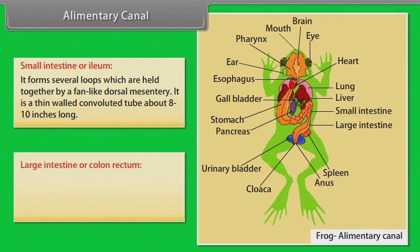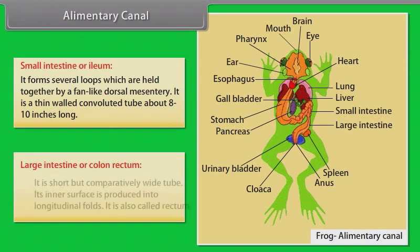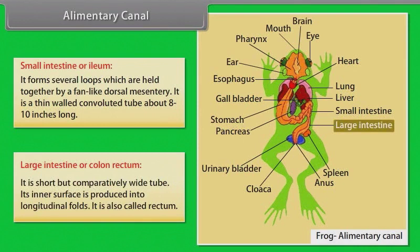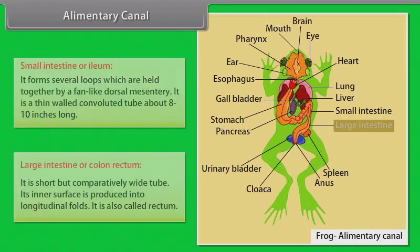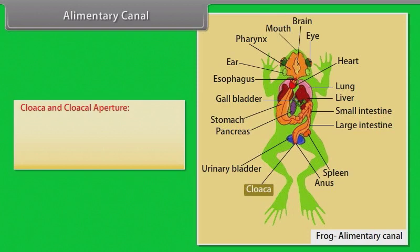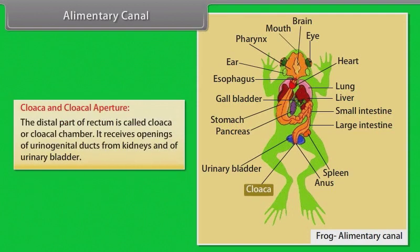Large Intestine or Colon/Rectum. It is short but comparatively wide. Its inner surface is produced into longitudinal folds. It is also called rectum. Cloaca and Cloacal Aperture. The distal part of the rectum is called cloaca or cloacal chamber. It receives openings of urogenital ducts from the kidneys and of the urinary bladder.